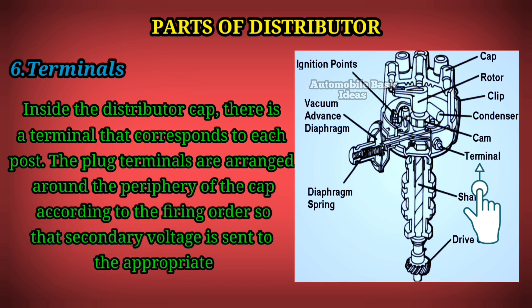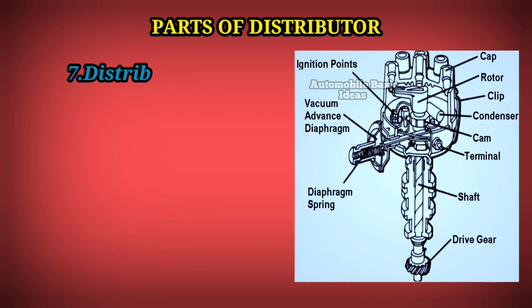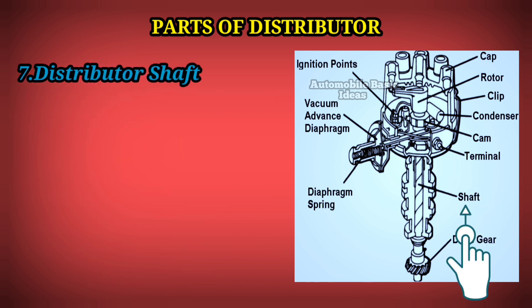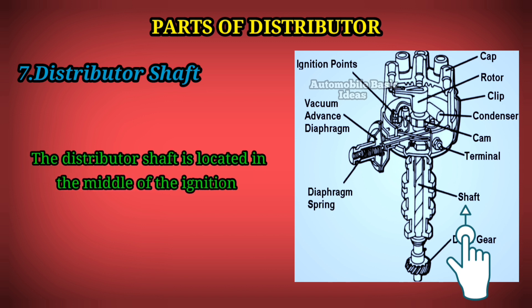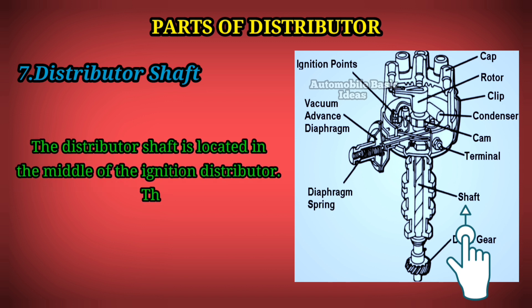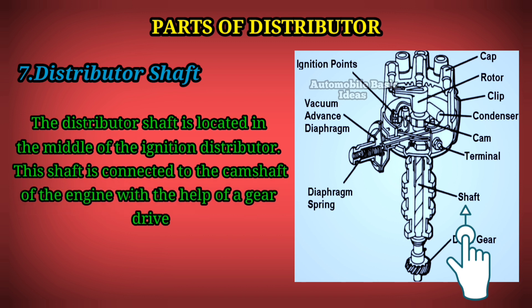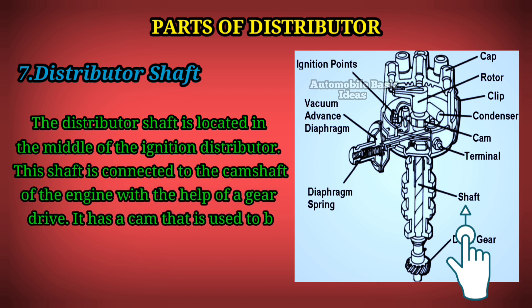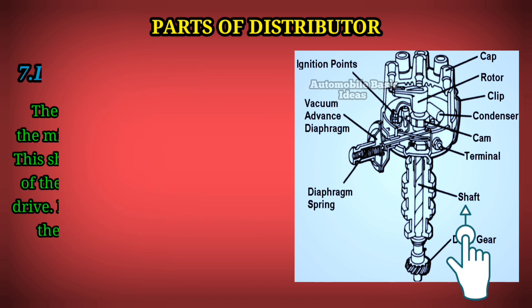7. Distributor Shaft: The distributor shaft is located in the middle of the ignition distributor. This shaft is connected to the camshaft of the engine with the help of a gear drive. It has a cam that is used to break the point of the contact breaker.